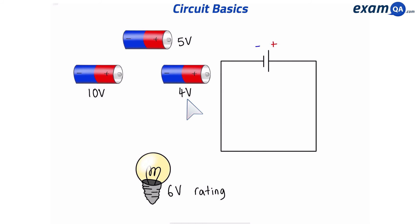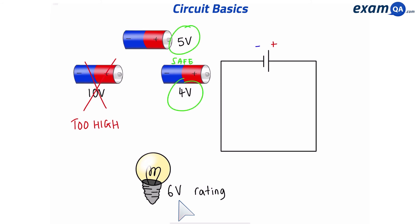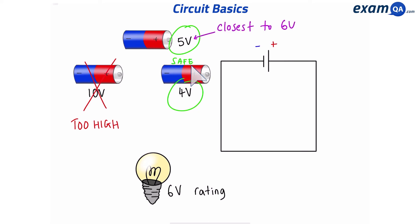Which cell should I use to get the brightest light? I can't use the 10-volt cell — the rating is too high since our bulb is only 6 volts. The 5-volt and 4-volt cells are both safe, but I can't use them together as that would make 9 volts. So I'll go with 5 volts — it's the highest safe option and closest to 6 volts, giving the brightest light.